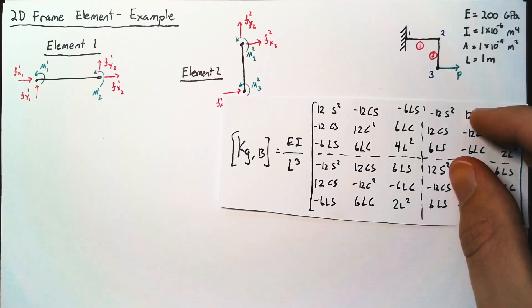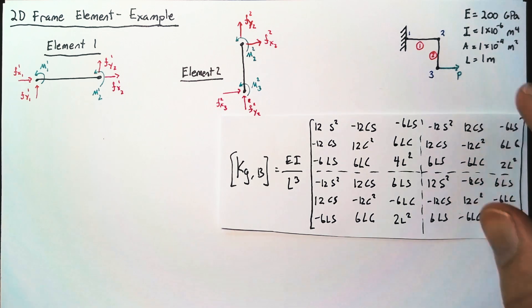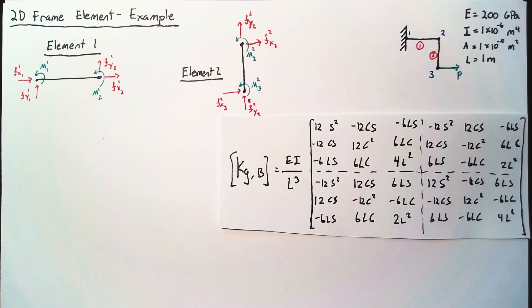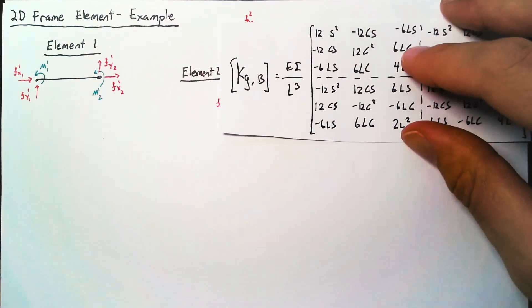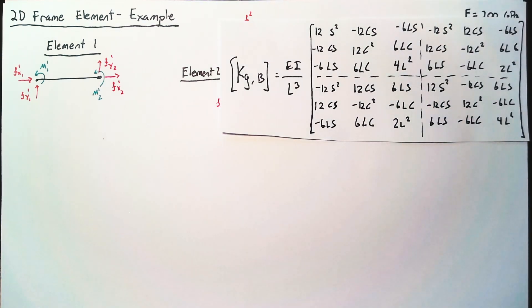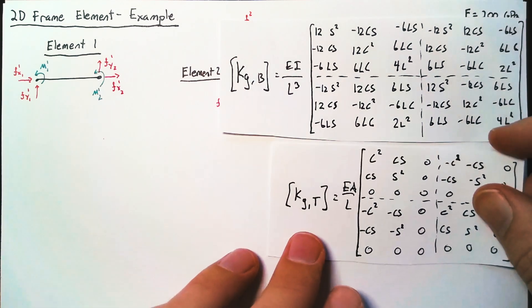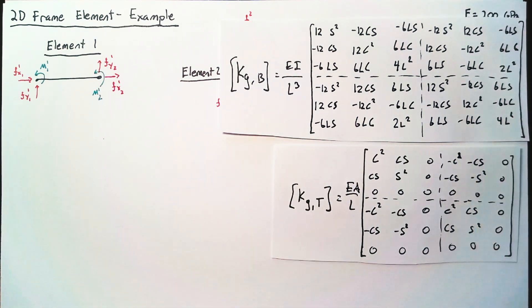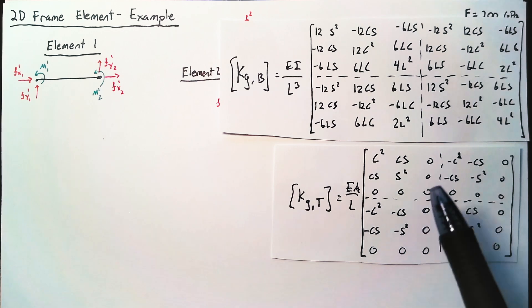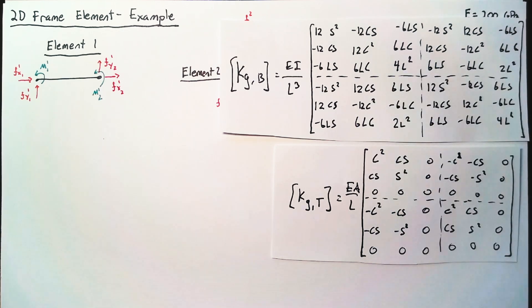So we will refer back to the theory section so that we can write that first elemental stiffness matrix. If you recall, we have in a frame the values for both a beam and a truss. We need to incorporate both of these into both of our elements.